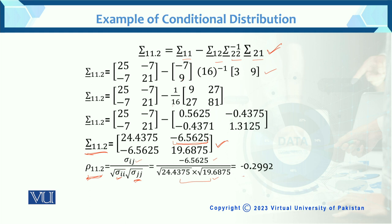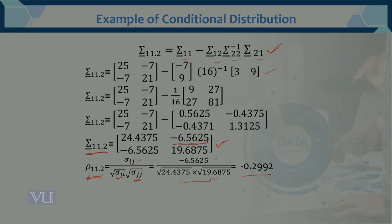you will get the answer of partial correlation 11.2, which equals minus 0.22992. So, if it's a covariance, won't do anything about it.